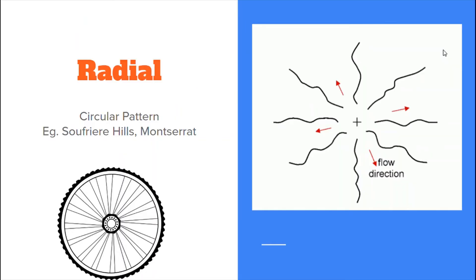For our first pattern, it is radial. This is a circular pattern where water is running from one main central high point. Since it is a high point, it is almost as if water is overflowing, and will therefore run out in all different directions around the peak. These create a pattern that looks like spokes on a bicycle wheel. This one is basically circular, and an example is Soufrière Hills in Montserrat.